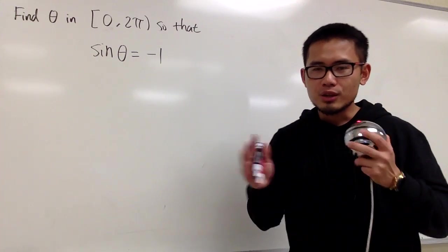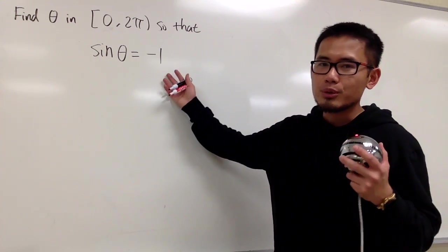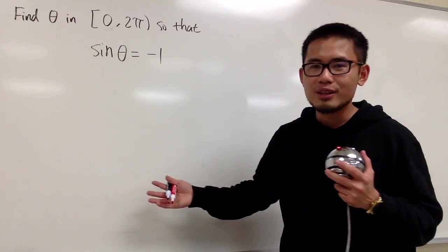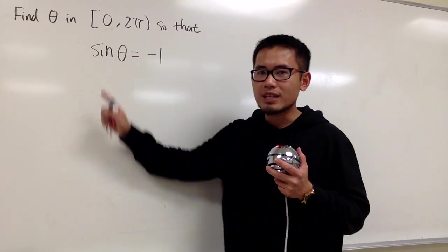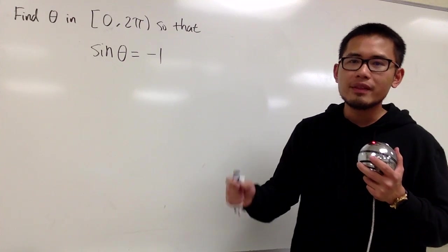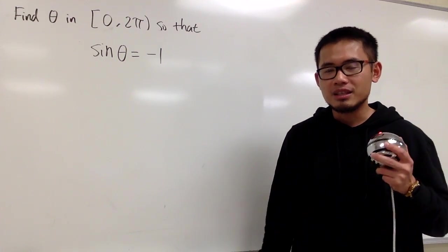For tangent, cotangent, secant, cosecant, it's possible you can still come with a reference triangle when you have the 1 or negative 1. But once again, for sine, cosine, 0, negative 1, and 1, utilize the idea of the unit circle.